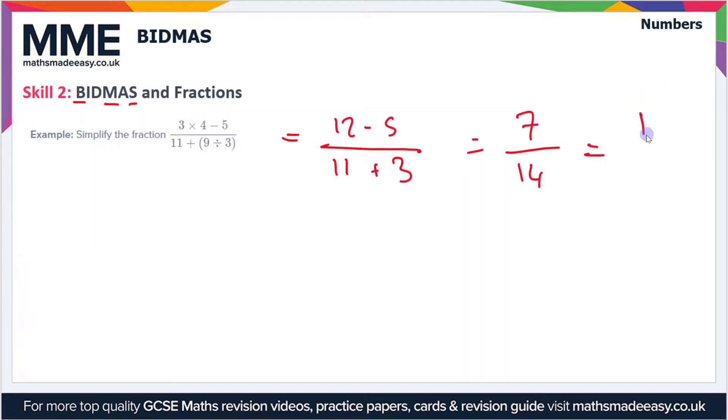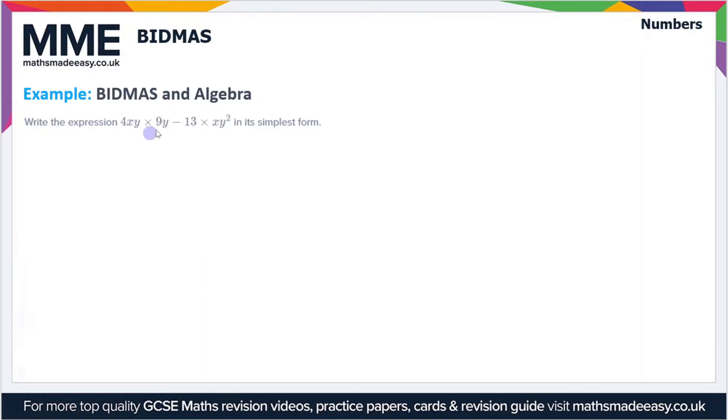Moving on, let's have a look at an example. We've got an algebraic expression here: 4xy × 9y - 13 × xy². We're going to write this expression in its simplest form. Looking at the order of operations, we've got to do this multiplication before we can do the subtraction, so we can put brackets around the expression if we want.